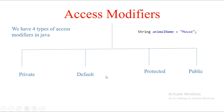We use access modifiers to manage the visibility of variables in particular classes. If you make a variable private, then the presence of that variable 'animalName' remains only in that class and nowhere else — even in a subclass or even if it is present in the same package.